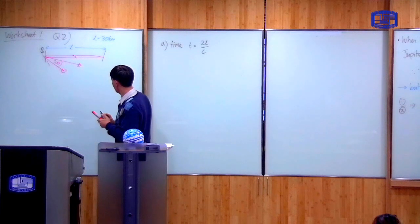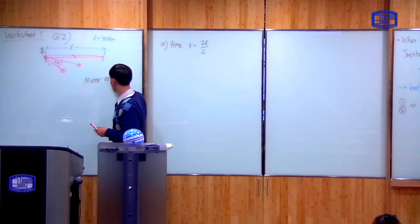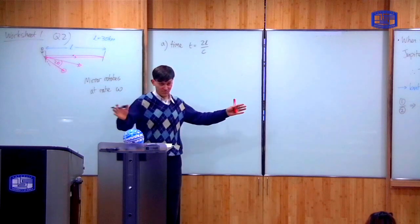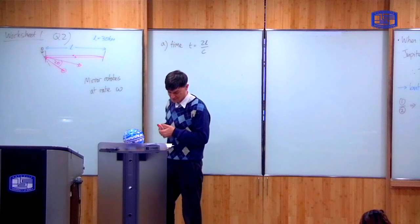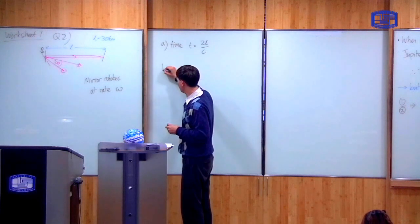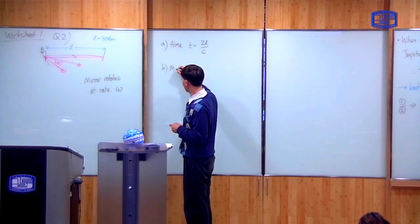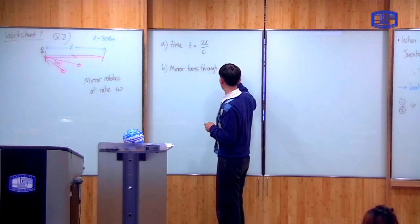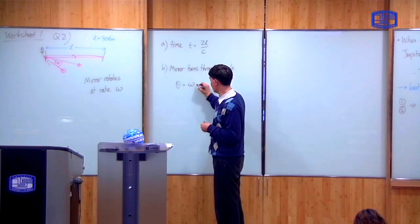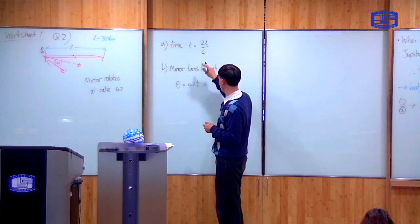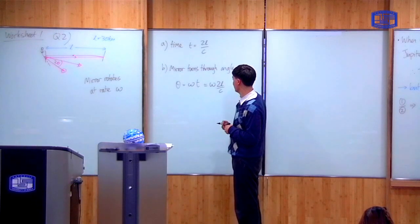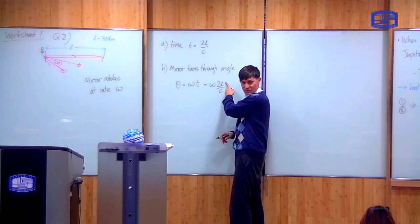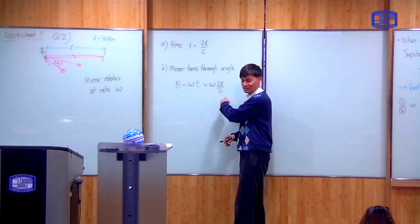Right. So let's suppose that the mirror rotates at a certain rate, omega. So omega is the rate of rotation of the mirror, which we know. Then, using that, you can find the angle that the mirror turns through. This is part B of the question. So the mirror turns through an angle theta, which is just the rate of rotation times the time. But from part A, the time is 2L over C. And in this experiment, you know everything, right? So you measure the angle theta. You know the rate of rotation. You know the distance between the mirrors. So therefore, you can calculate the speed of light. That's the way it works.